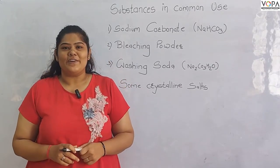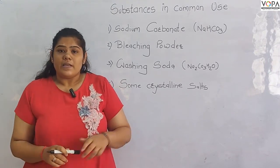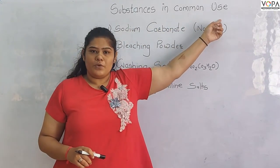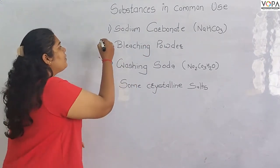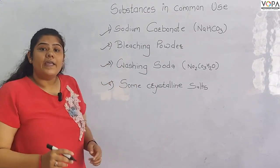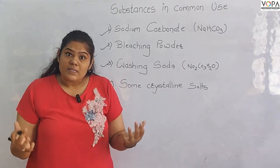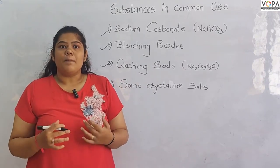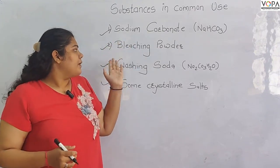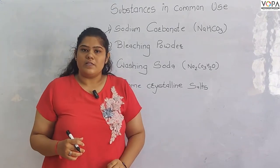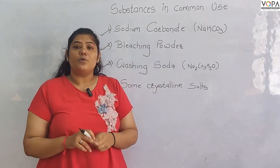Hello students, hope you all are doing good. In this chapter we will learn about various chemicals. First of all, this chapter is about substances in our common use. We will discuss substances that are valuable in daily use, such as sodium carbonate, bleaching powder, washing soda, and some crystalline salts.